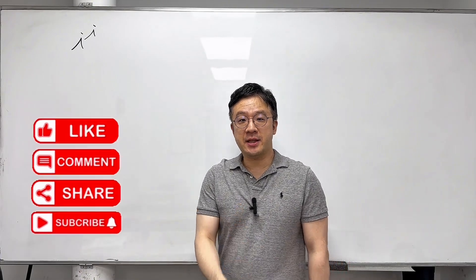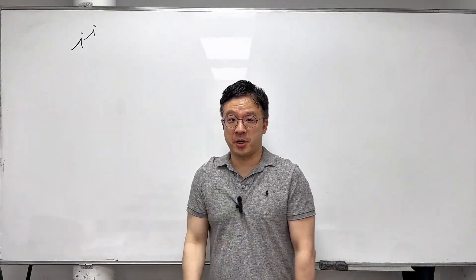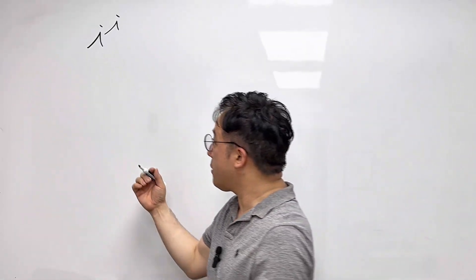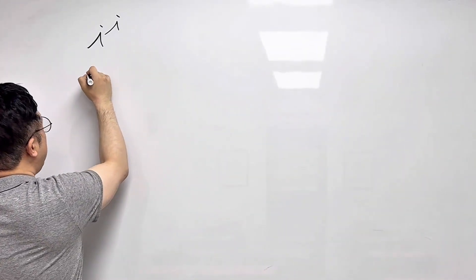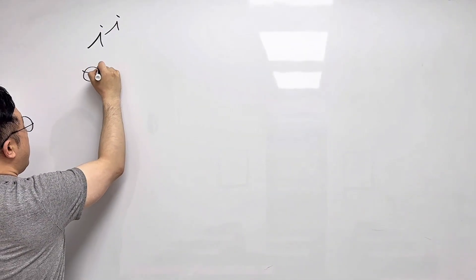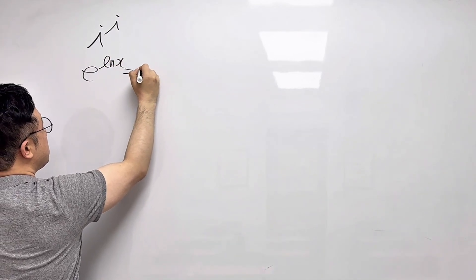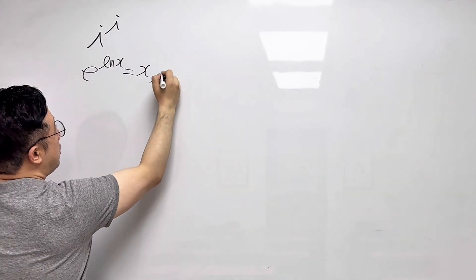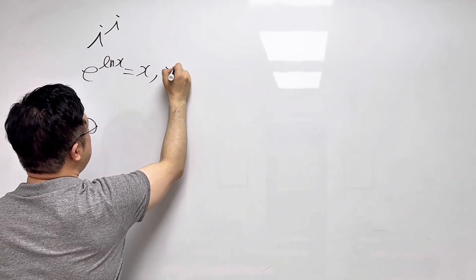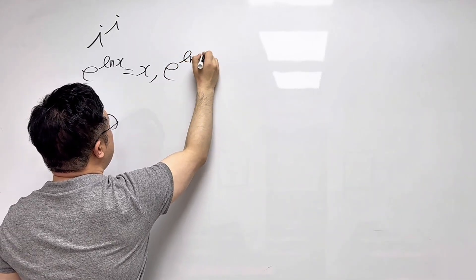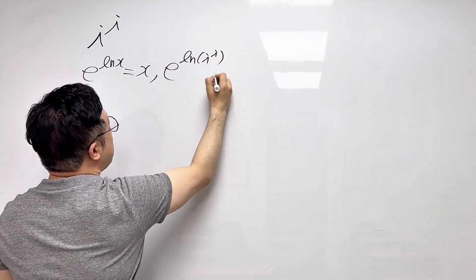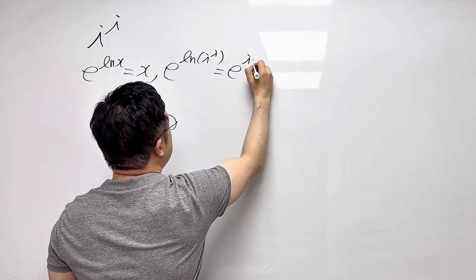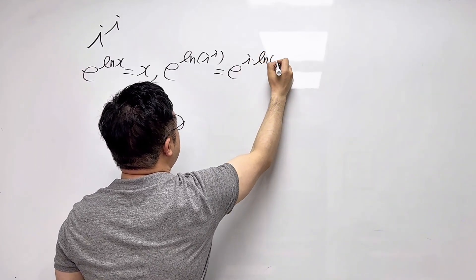So like I said, i to the power of i is a real number, but we have infinitely many values for this. We have e to the power of ln(x), which is equal to just x. So for i to the power of i, we can write it as e to the power of ln of i to the power of i. This is the same as e to the power of i times ln of i.